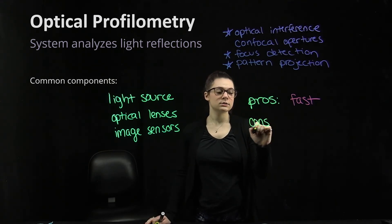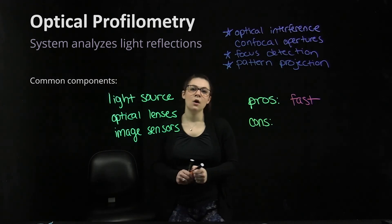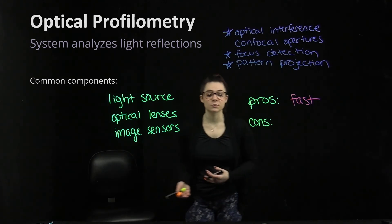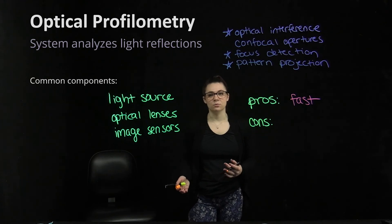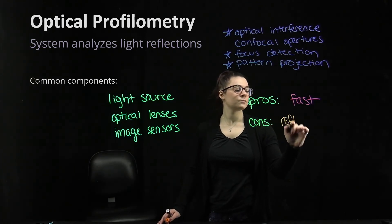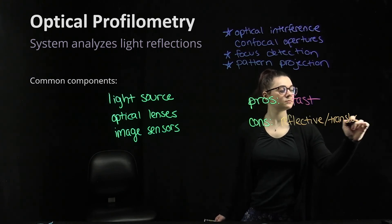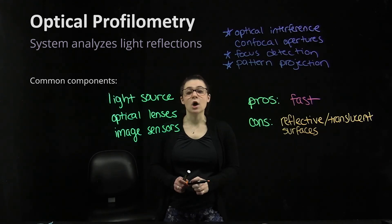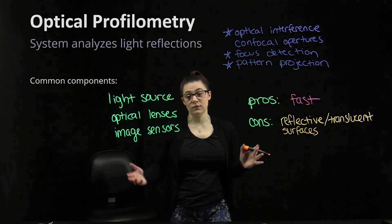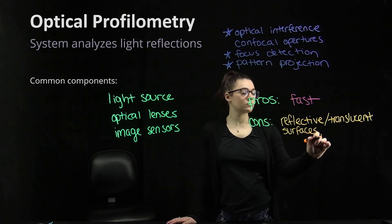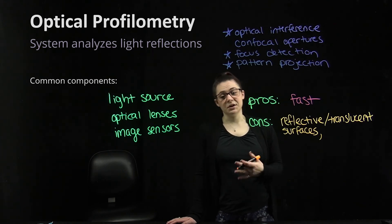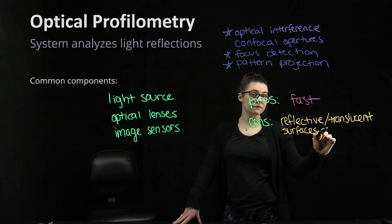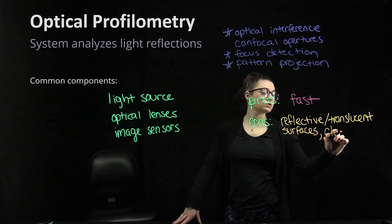The main cons are that optical profilometry has difficulty with reflective or translucent surfaces — unlike stylus profilometry, the optical properties of the material do matter here. If the system can't determine where the focus is, it can't determine how the surface morphology looks. We also need a very high level of cleanliness, as any piece of dirt or imperfection will affect the measurements.